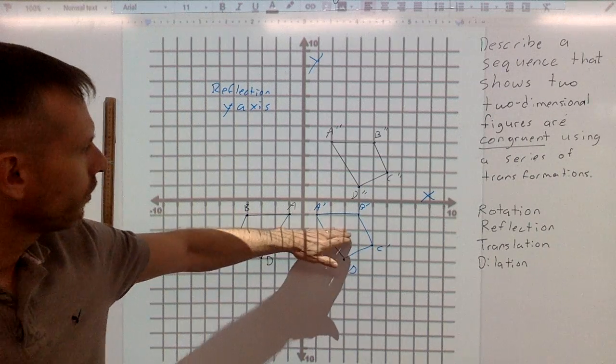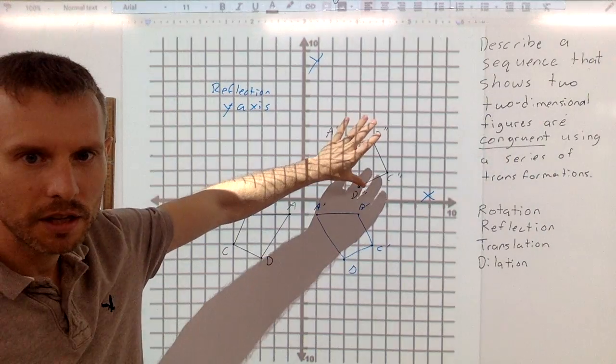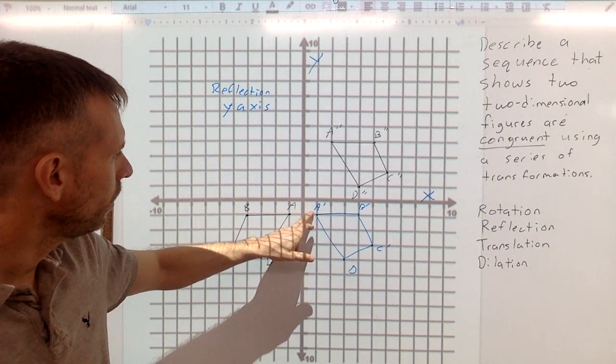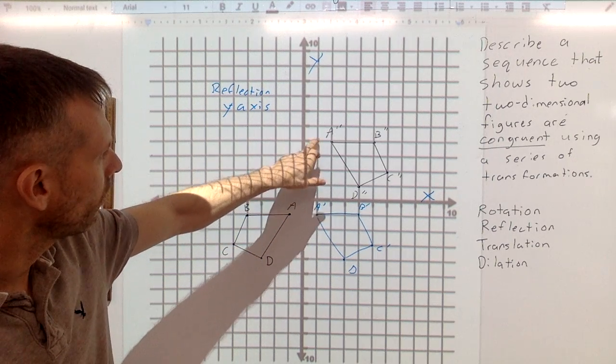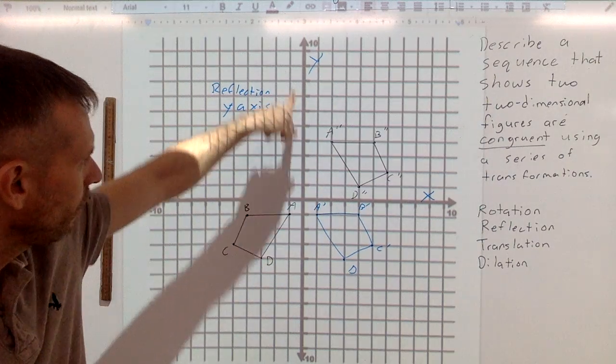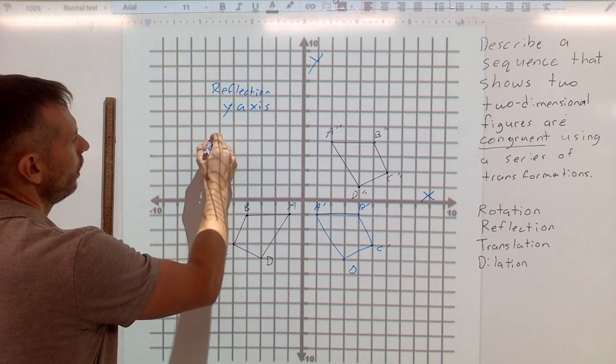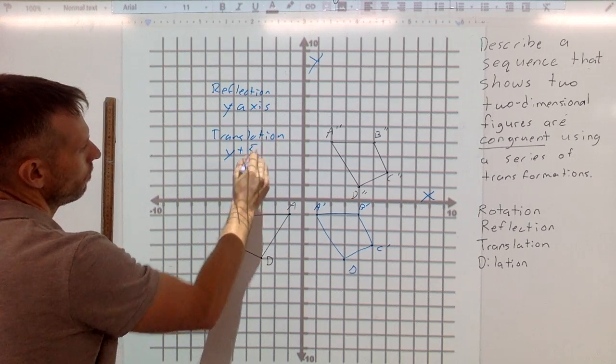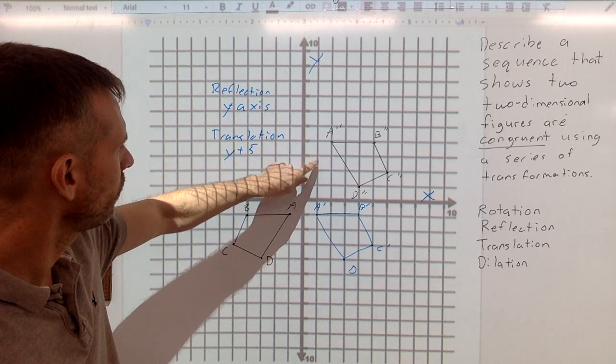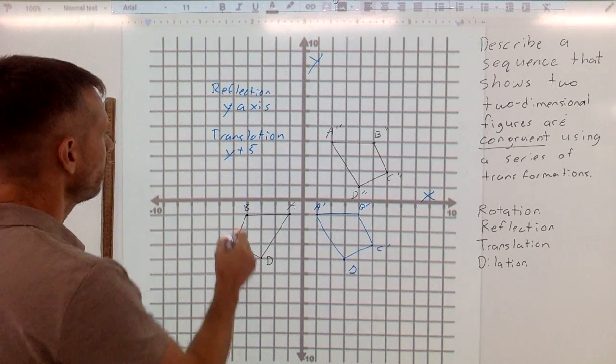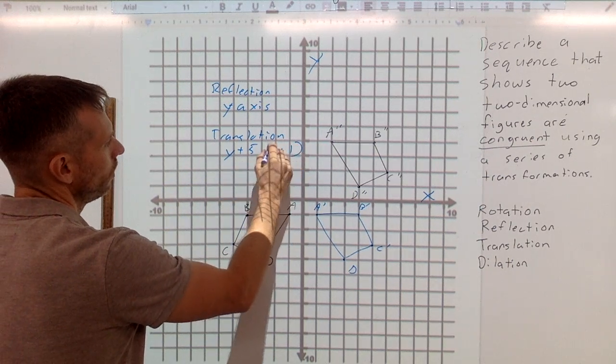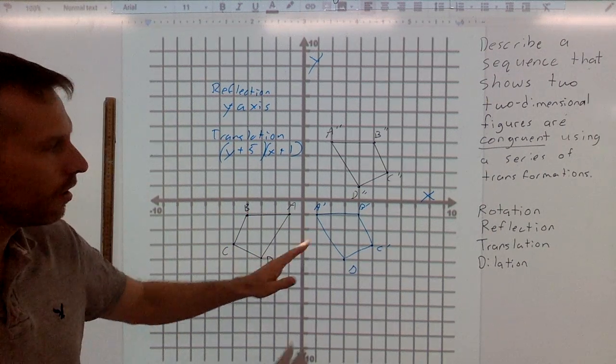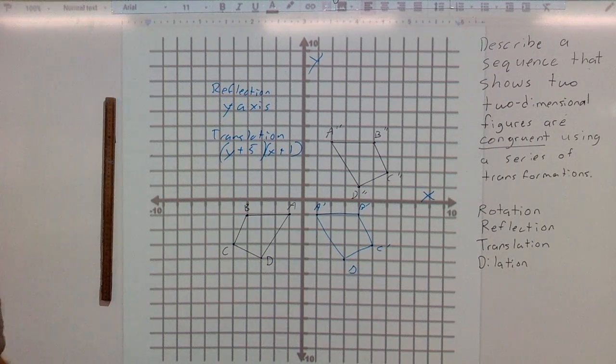Now next, to go from here to here, it looks like it's all oriented the same. There's an A, B, C, D, A, B, C, D. So this looks just like a slide. So I need to go up 1, 2, 3, 4, 5, and up and down is the Y axis. So that's going to be a translation of Y plus 5. And then X is to the right 1, so X plus 1. So up 5 and right 1, and it looks like I will get to this image. There's the translation there.